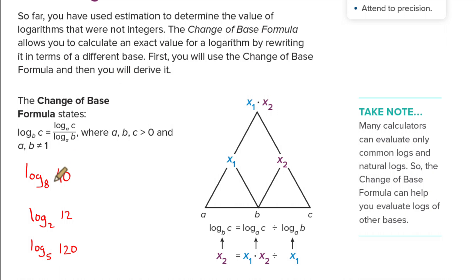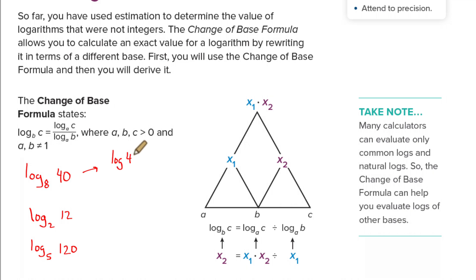Here are three examples in different bases. Back in the old days, we only had tables for common logs — log base 10. So to figure out a base-8 log, you'd rewrite it as log of 40 over log of 8. That's the change of base property. You have the log of 40 over the log of the base, and these are equivalent to each other. Let's pull up a calculator to check it.